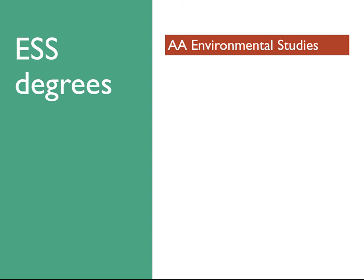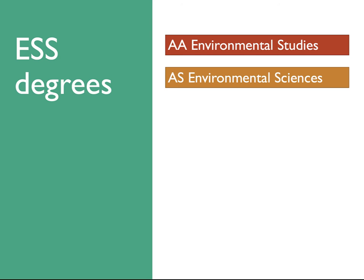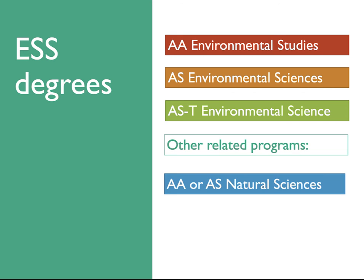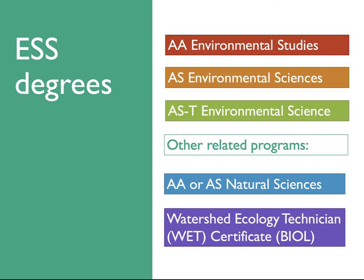At Sierra College we offer three degrees in ESS. We have an Associates of Arts or AA in environmental studies, an Associates of Science or AS in environmental sciences, and an Associates of Science for Transfer or AST in environmental science. Other related programs include the natural sciences AS and AA degrees, as well as the watershed ecology technician or WET certificate, which you'll find under the biology department in the catalog.